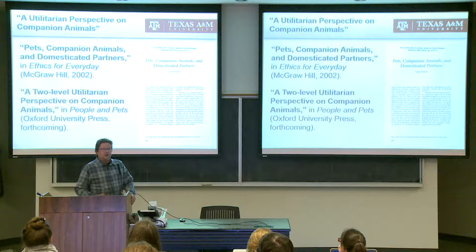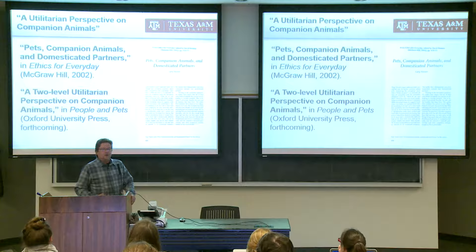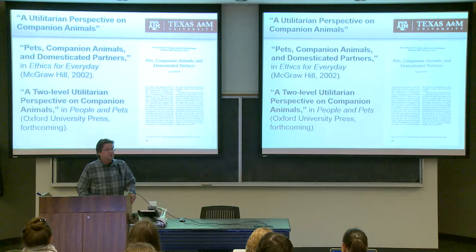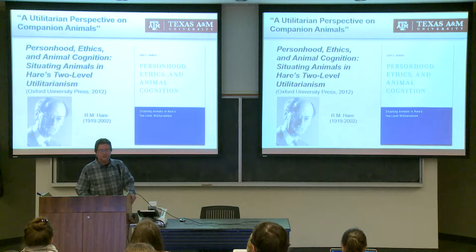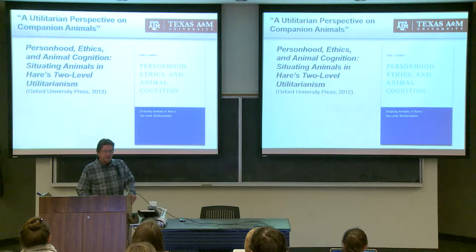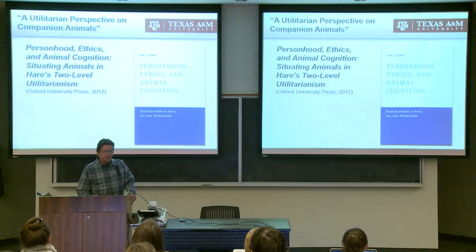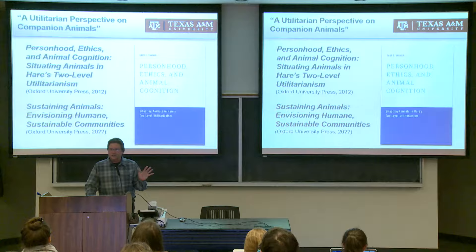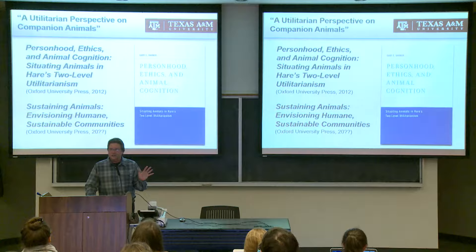The forthcoming paper is called 'A Two-Level Utilitarian Perspective on Companion Animals,' forthcoming in the volume Pets and People. I was also invited because I published a book titled Personhood Ethics and Animal Cognition: Situating Animals in the Two-Level Utilitarianism of R.M. Hare, and I have a sequel in progress titled Sustaining Animals: Envisioning Humane Sustainable Communities. Any feedback from this presentation could improve that work.